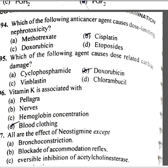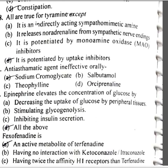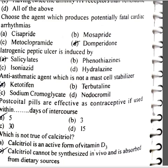Vitamin K is associated with blood clotting. All are effects of neostigmine except constipation. All are properties of thiamine except it is potentiated by uptake inhibitors. Anti-asthmatic agent ineffective orally is sodium cromoglycate. Epinephrine elevates the concentration of glucose by decreasing the uptake of glucose by peripheral tissues, stimulating glycogenolysis, and inhibiting insulin secretion. Fexofenadine is an active metabolite of terfenadine. Choose the agent which produces potentially fatal cardiac arrhythmias: domperidone. Dihydrogenic peptic ulcer is induced by salicylate. Anti-asthmatic agent which is not a mast cell stabilizer is ketotifen.